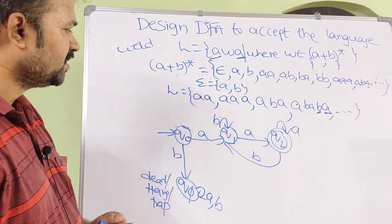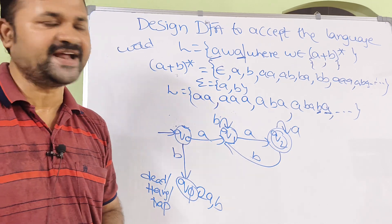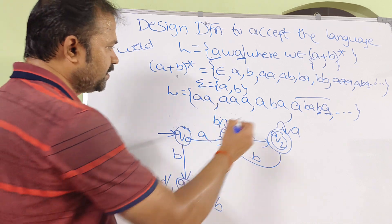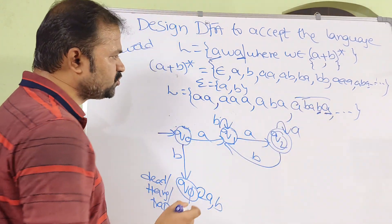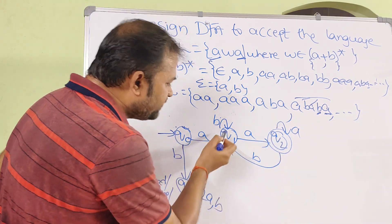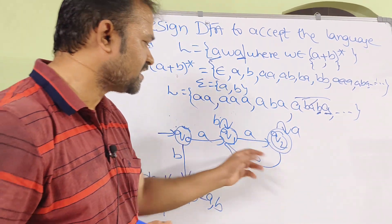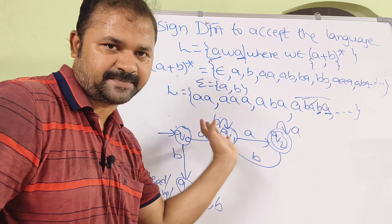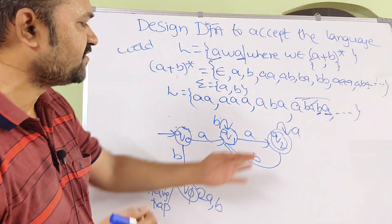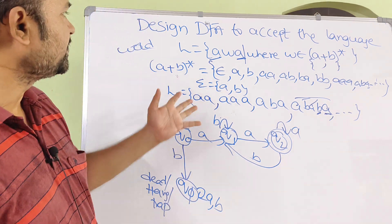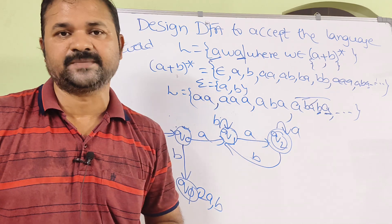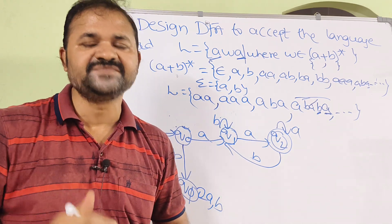Now let us take a string and verify. Starting at Q0: on A go to Q1; on B stay at Q1; on A go to Q2; on B go back to Q1; on A go to Q2, which is the final state. So the string is accepted. This confirms our DFA is correct — it accepts the language AWA, meaning strings starting with A and ending with A.